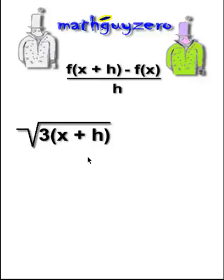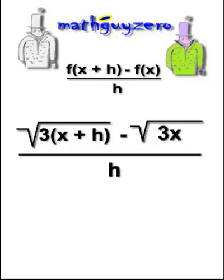First thing you do is every time you see an x in the original function, you replace it with x plus h. We know the function of x is the square root of 3x. We're going to subtract that, and divide that whole thing by h.